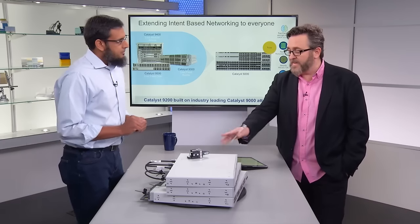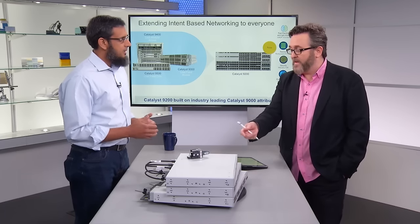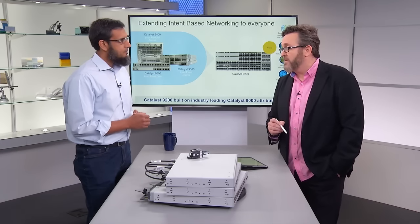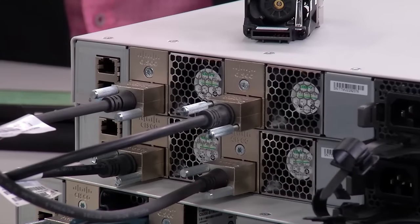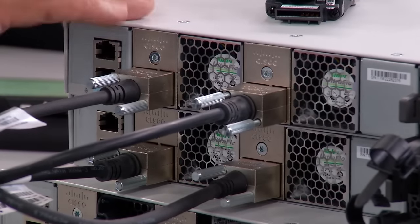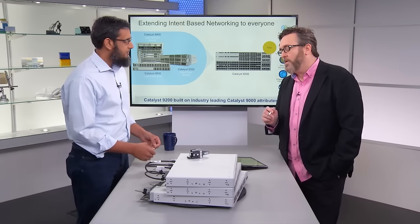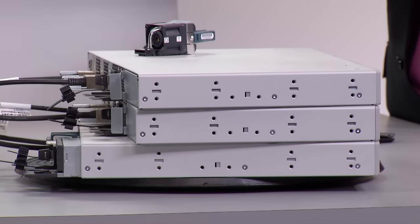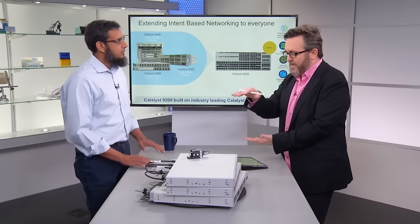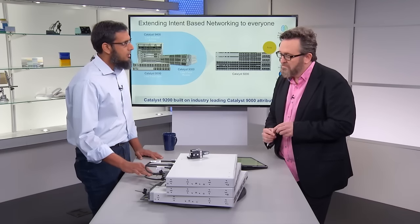On the Catalyst 9200 series, we also have a much more enhanced stacking compared to its predecessor, the Catalyst 2K. People using the 2K have been waiting to get into the 9000 family — they didn't have the redundant power supply or stacking options. We are extending Stack-Wise technology to the Catalyst 9200, powering these units to 80 gigabits of stacking bandwidth on the 9200L and 160 gigabits on the Catalyst 9200. You can stack up to eight switches, but you must stack within the same subfamily — 9200L with 9200L, and 9200 with 9200.